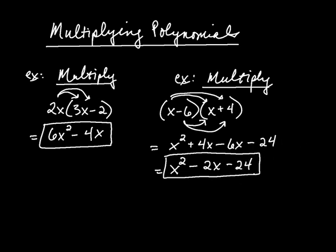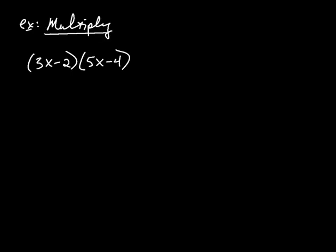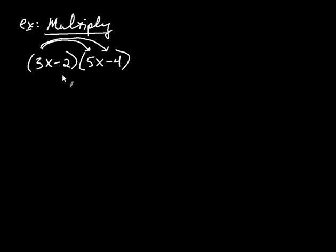Let's try another one like this. We're multiplying two binomials again. Starting with the 3x, multiply it by both terms. So first it's 3x times 5x, and then 3x times negative 4 after that. Then we move on to the negative 2: negative 2 times positive 5x, and negative 2 times negative 4.